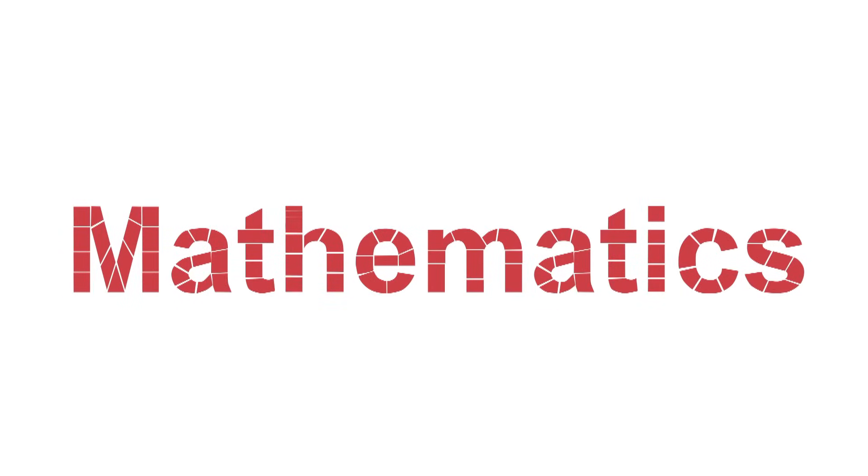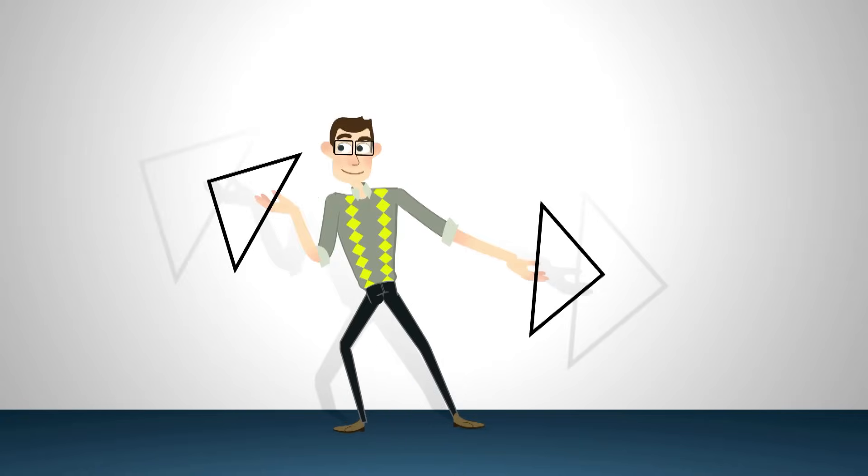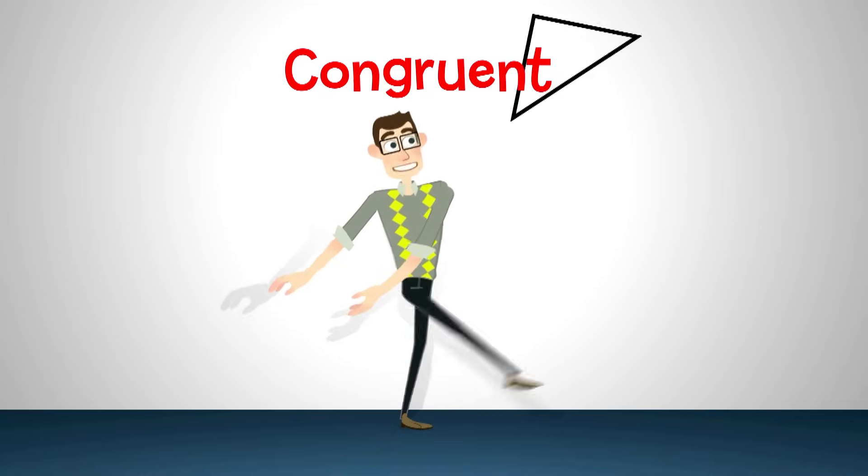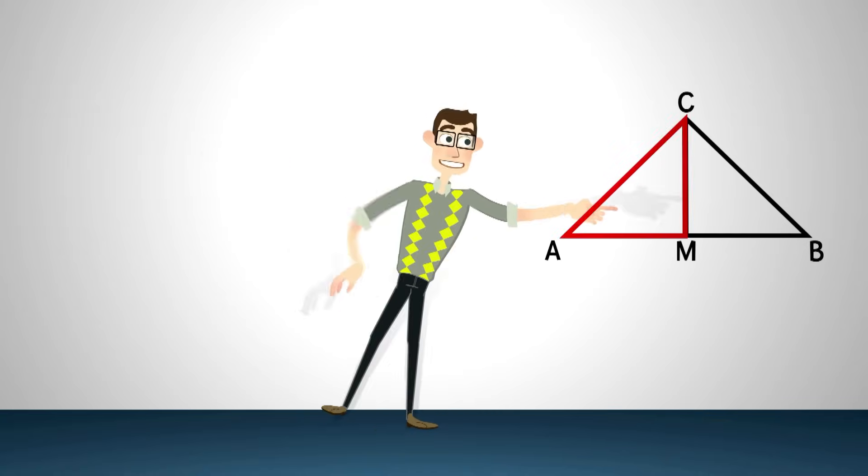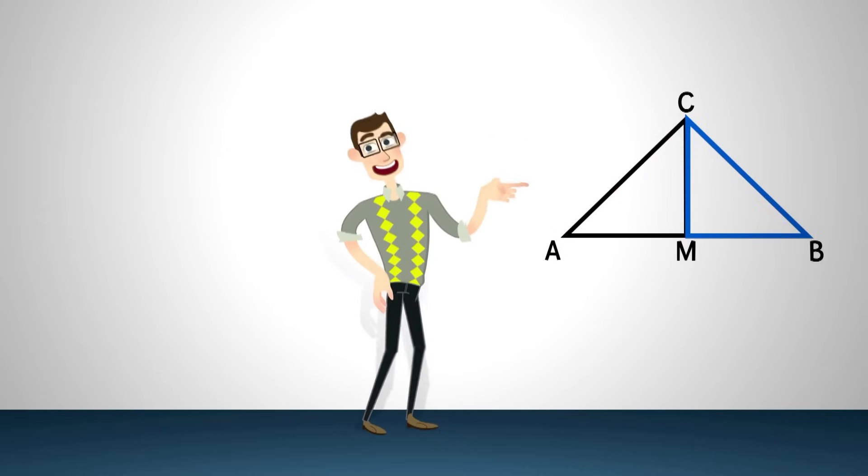Let's check out an example. Say I want to prove that these two triangles are the same size and shape. In other words, they are congruent. Well, one way to do that is to write a proof that shows that all three sides of one triangle are congruent to all three sides of the other triangle.